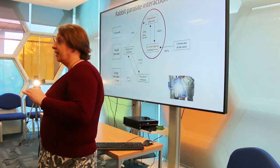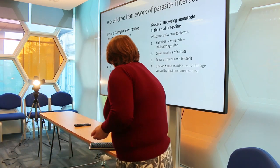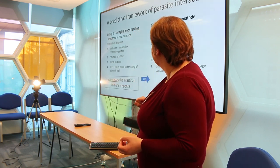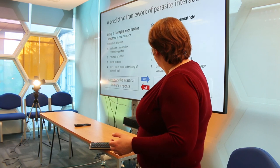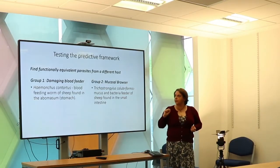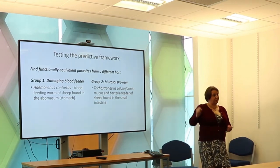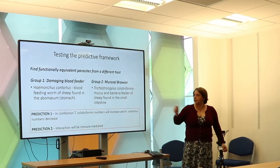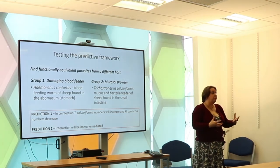If we're right about this and about the groupings, we should be able to go to a new species in a new host and see the same pattern. So we took Haemonchus contortus — a blood-feeding worm in the abomasum of sheep — and Trichostrongylus colubriformis, which, like the Trichostrongylus in rabbits, is a mucus and bacteria feeder living in the small intestine. We made predictions: in co-infection, T. colubriformis numbers will go up, Haemonchus numbers will go down, and that interaction will be immune-based.